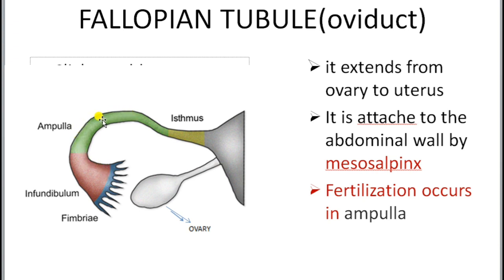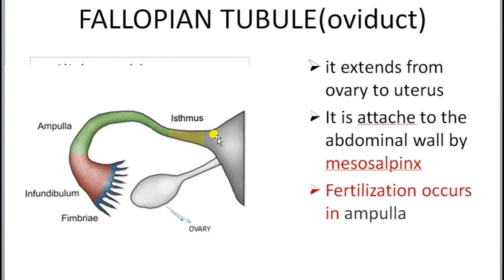The ampulla is the widest and longest portion of the fallopian tubule. This is the region where fertilization occurs. The union of ovum and sperm is known as fertilization, which occurs in the ampulla region of the fallopian tubule. The isthmus is a short and narrow tube which connects the fallopian tubule and the uterus.